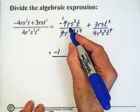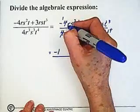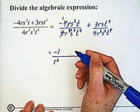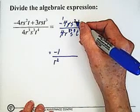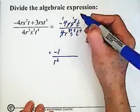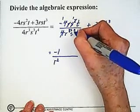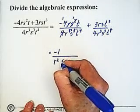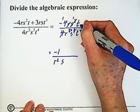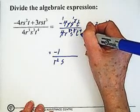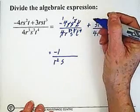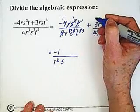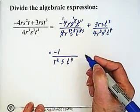We have r in the numerator and r cubed in the denominator. Dividing by r leaves us with 1 on top and r squared in the denominator. We have s squared in the numerator and s cubed in the denominator. We divide by s squared — top becomes 1, and we're left with s in the denominator. We have 1 t in the numerator and t to the fourth in the denominator. Dividing by t gets rid of the t in the numerator and leaves us with t cubed in the denominator. So this term is minus 1 over r squared s t cubed.